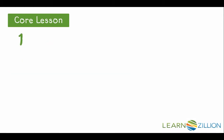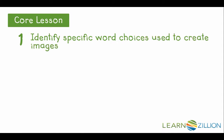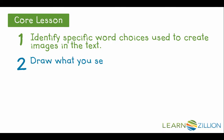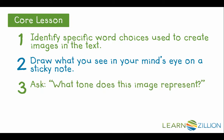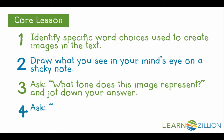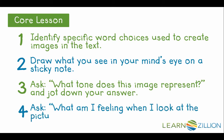So let's review the steps for determining how figurative language impacts the tone of a story. First, identify specific word choices that are used to create images in the text. Then, draw what you see in your mind's eye on a sticky note. Ask yourself, what tone does this image represent? And jot down your answers. And finally, ask, what am I feeling when I look at the picture? And jot down this answer as well.